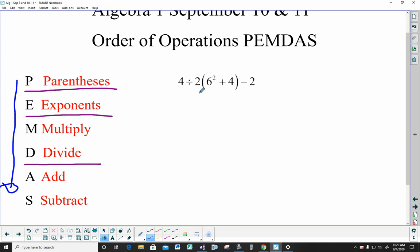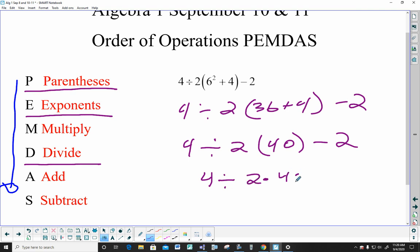We start in parentheses first. So 4 divided by 2. Then that's 36 plus 4 minus 2. I'm still doing the work in the parentheses. 4 divided by 2, and then that's going to be in parentheses 40 minus 2. So I've taken care of parentheses. Those are done. There are no exponents. That's done.